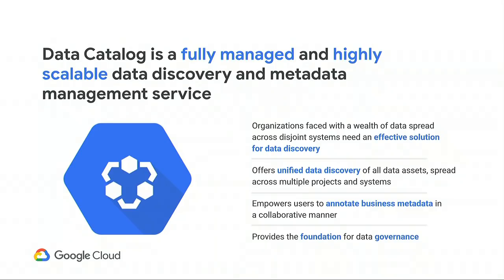We have built a system that provides a unified view of all your data assets, starting with assets in GCP. Whether you have data in BigQuery, PubSub, GCS, or other systems going forward, we give you a way to discover your data spread across all these systems. It's a smart catalog requiring minimal work. Google has been dealing with large numbers of data assets for many years, and we're now in our third iteration of an internal data catalog handling more than a million objects, used by more than 30,000 active Googlers.